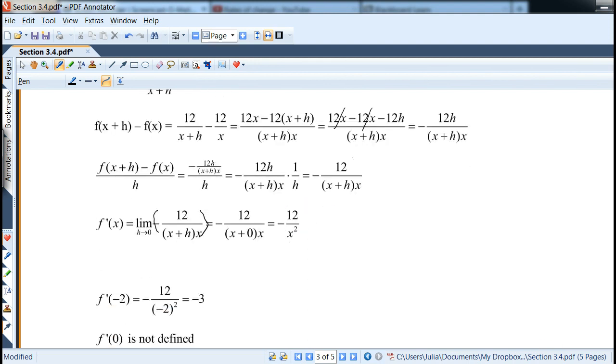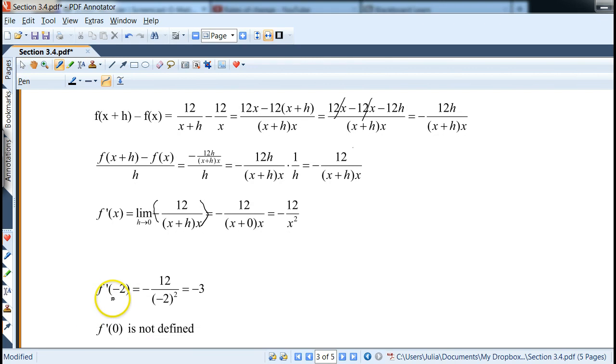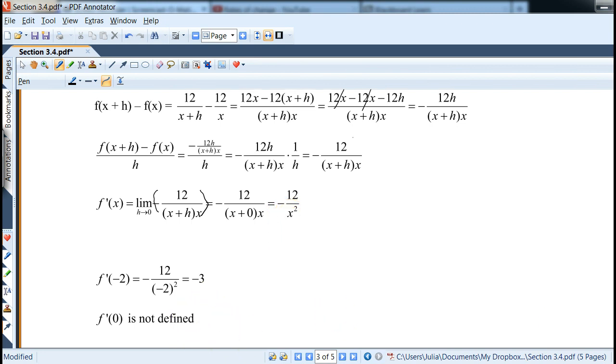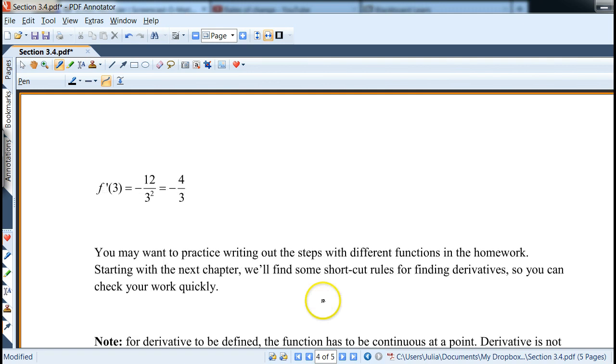So that's the derivative function. Again, we can plug in negative 2. So we'll get negative 12 over negative 2 squared, which is negative 3. Now 0, on the other hand, the function would not be defined because you have 0 in denominator or does not exist like in my math up as often mentioned. And same thing with a 3. We'll get negative 12 over 3 squared, which is, if we reduce it, that's negative 12 over 9, which is negative 4 over 3.